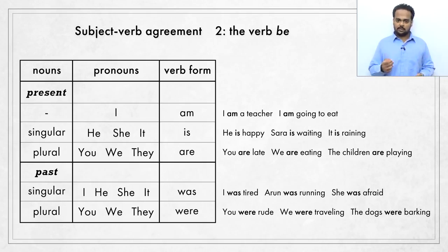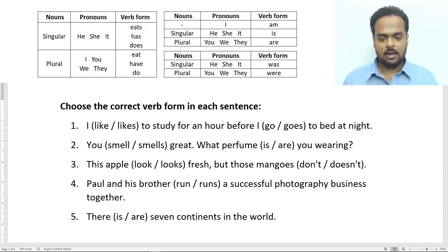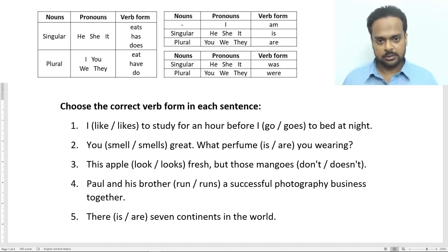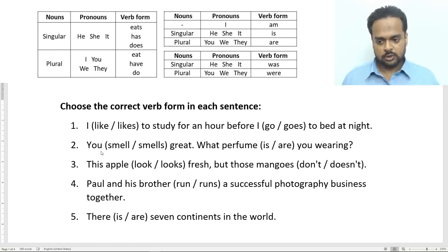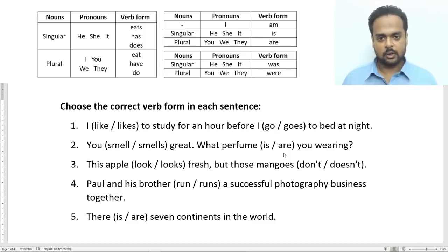If you memorize the simple rules in this table, you'll find that using the verb be correctly is really no trouble at all. Alright, it's now time for our quiz. I have a few tables on that side showing all the rules for subject-verb agreement we've discussed: the first for verbs in general, and the next two for the verb be — present and past tense. I have a total of 17 sentences to practice with. In each sentence, choose the correct verb form from the two options given. Stop the video now, think about your answers, then play the video again and continue.